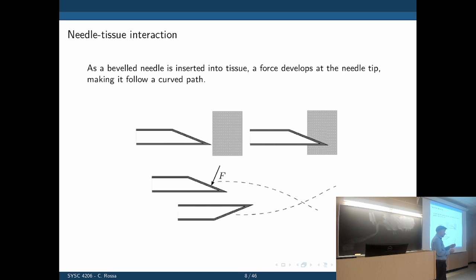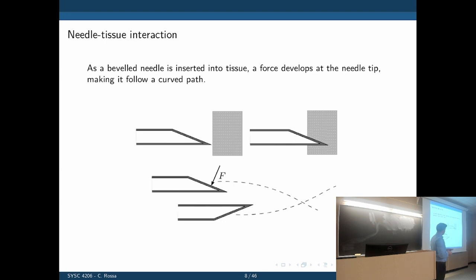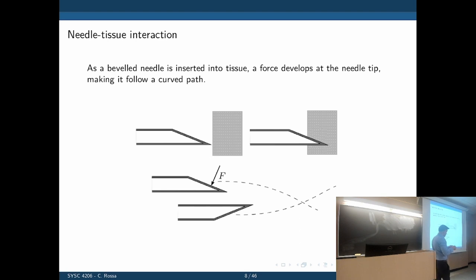These two needles have different bevel angles — they make cutting through the tissue easier, but at the same time they create a problem. As we insert the bevel through the tissue, we are cutting through it. The tissue on both sides of the needle moves away and applies force back to the needle tip. Because the tip is not symmetric, there is a net force pointing in the direction of the bevel, which makes the needle bend away from a straight line. If the bevel points downwards, the needle bends downwards; if the bevel points upwards, the needle goes upwards.